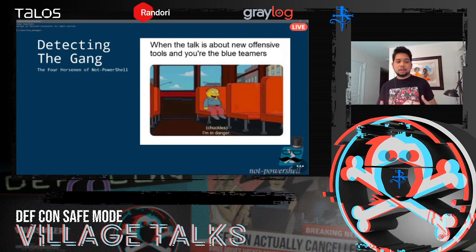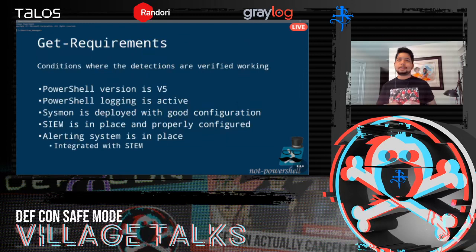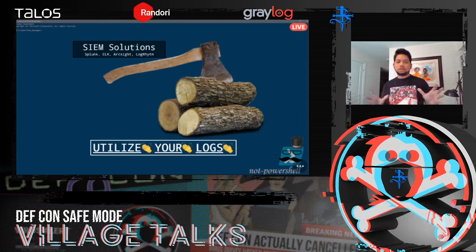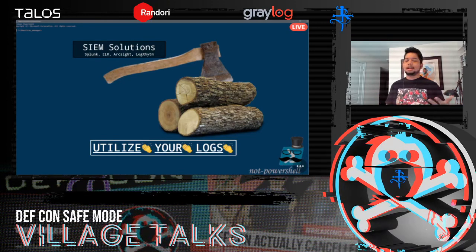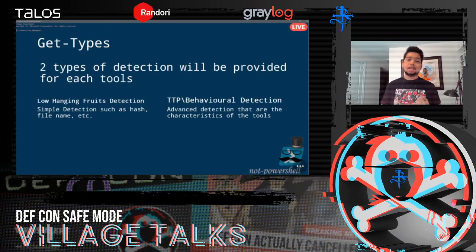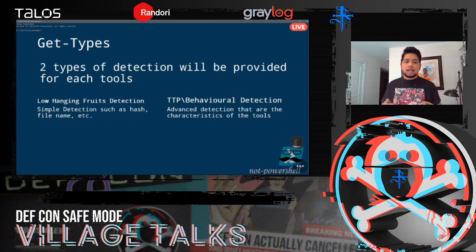Now that we understand what the not-PowerShell gang is, let's move forward with detection. Make sure you have the required environment ready if you're trying to deploy these detections. The whole goal of this presentation is to utilize your SIEM — you can use Splunk, Elastic, or whatever solution you want. There are two types of detection: low-hanging fruit detections that are easy to create and easy to bypass, and more advanced detections based on TTPs and tool behavior that are harder to create but also harder to bypass.